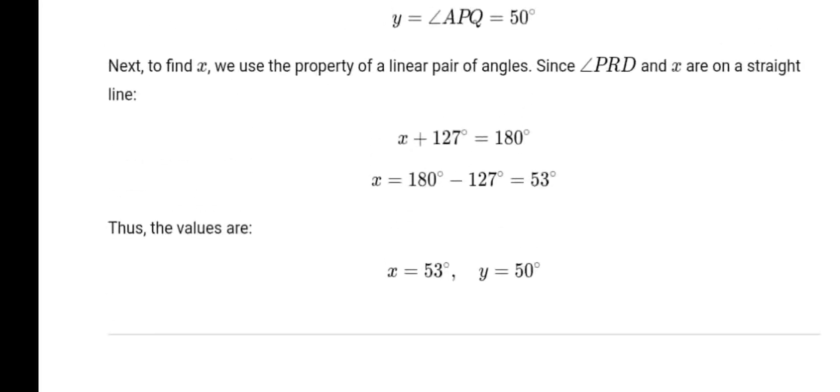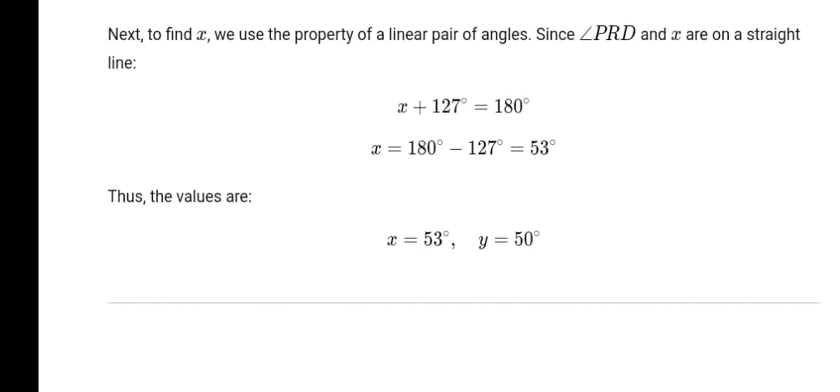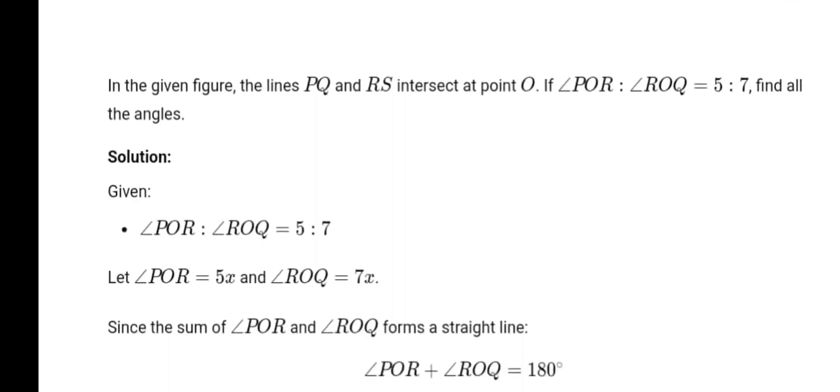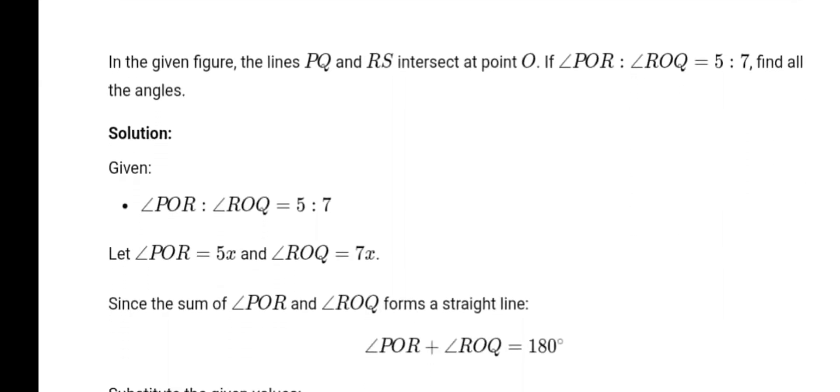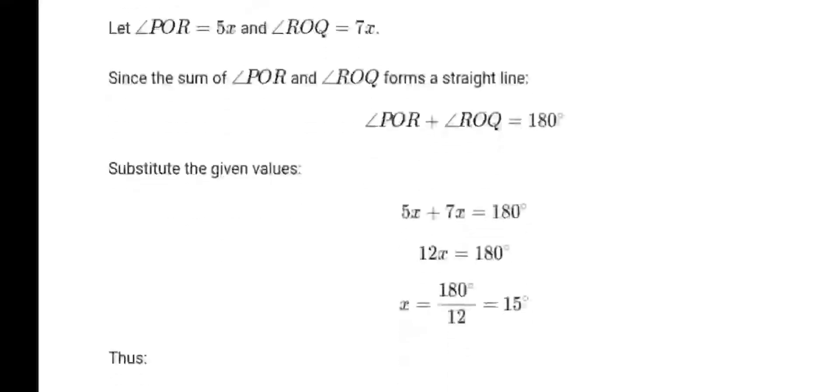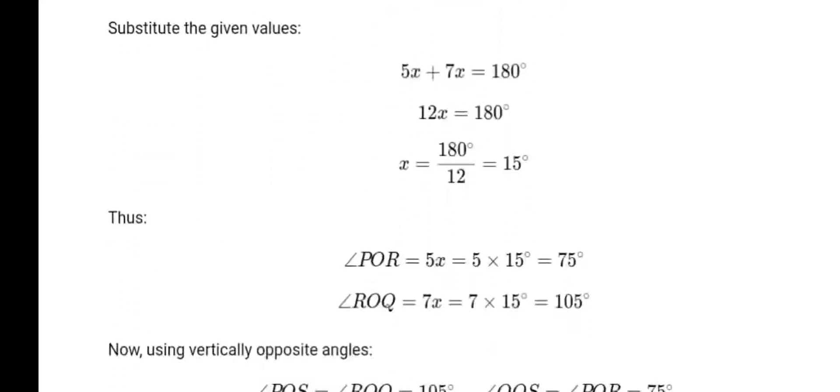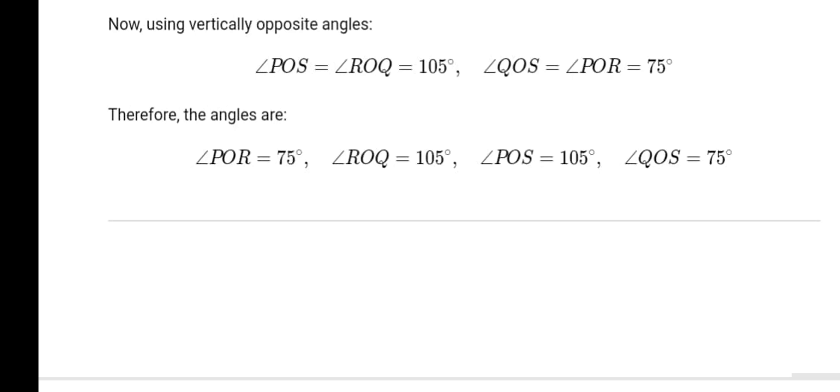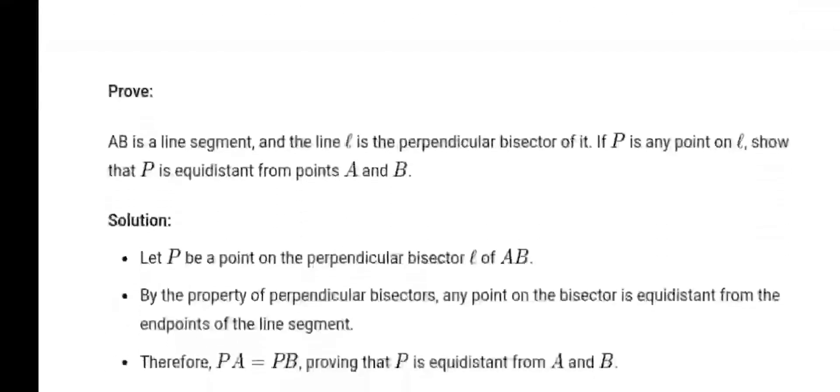Q.6 Prove if point C is located between points A and B such that AC equals BC, prove that AC equals half AB. Or, write Euclid's 5th postulate. Q.7 Write the RHS congruence rule. Or, write the ASA congruence rule.